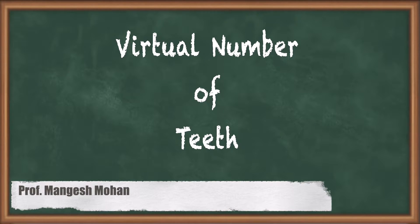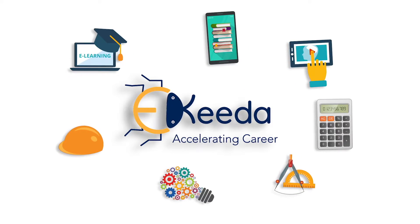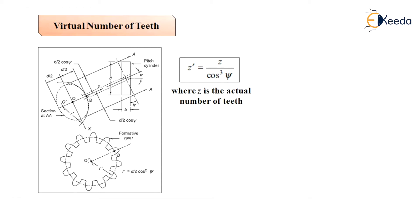Hello students. In this section, let us talk about virtual number of teeth related to helical gears. The pitch cylinder of a helical gear is cut by a plane AA which is normal to the tooth element, as shown in figure. When a cylinder is cut by a plane which is inclined to its base, the cut section is an ellipse. We will apply this rule of engineering drawing to the pitch cylinder.